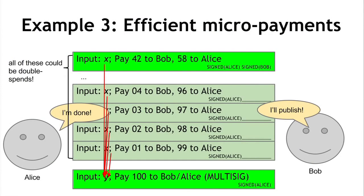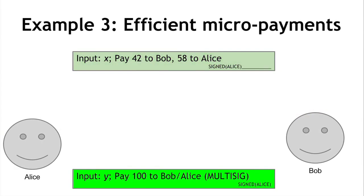Technically, all of those intermediate transactions are double spends — unlike green addresses where we tried to avoid double spends, this micropayment protocol generates a huge number of potential double spends. In practice, if both parties operate normally, Bob will never sign any transaction but the last one, so the blockchain won't see any actual double spend attempt. But there's a tricky detail: what if Bob never signs the last transaction? He might just let the coins sit in escrow forever, leaving Alice out the full amount she paid at the beginning. There's a clever solution to this using a feature mentioned earlier called lock time.